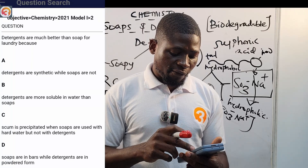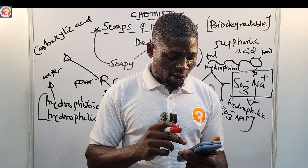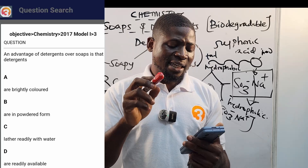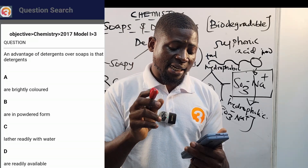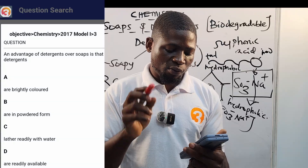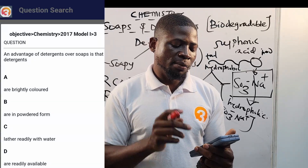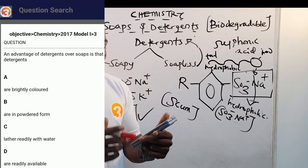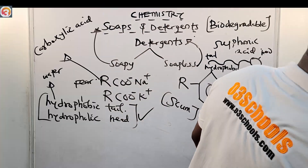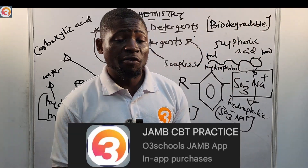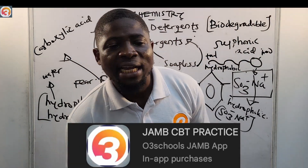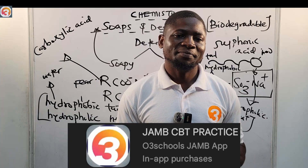2017, number 3: an advantage of detergents over soaps is that detergents — A: are brightly coloured; B: are in powder form; C: lather readily with water; D: are readily available. Correct answer is option C — lather readily with water. Thank you so much for watching. The next class we move to amines. My name is Master T, the Grand Commander of this Army. Soldiers, keep reading. See you there.